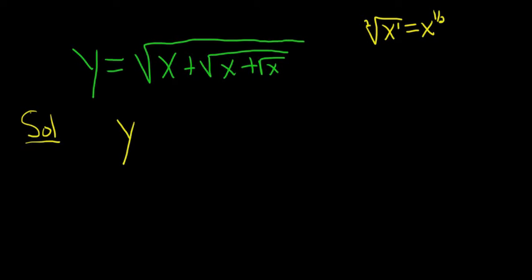So first, let's rewrite it. So y is equal to parentheses x plus parentheses x plus x to the 1 half, 1 half, ridiculous, 1 half.